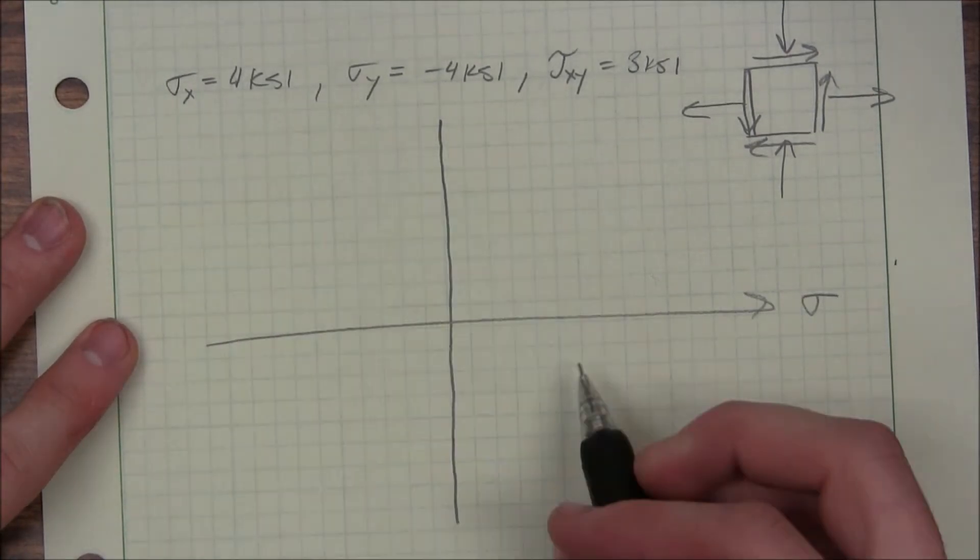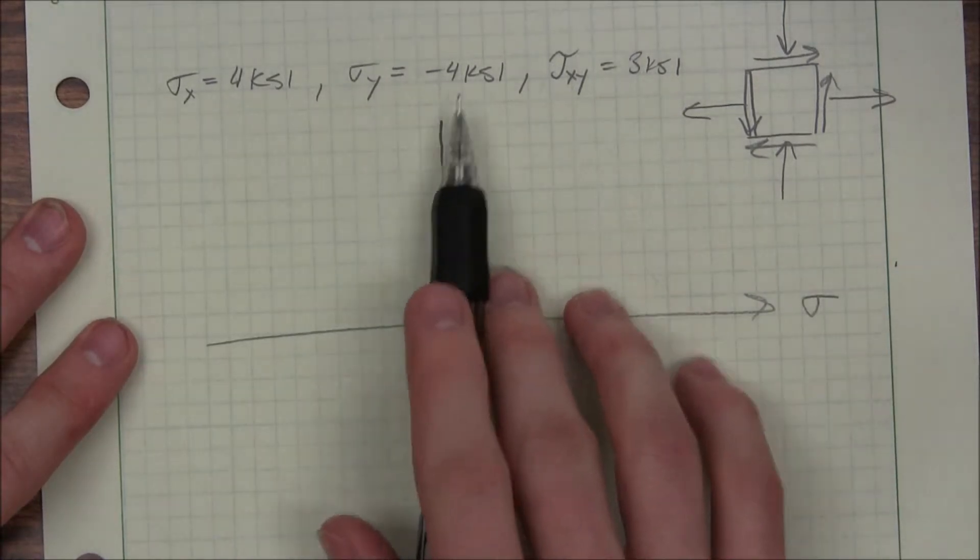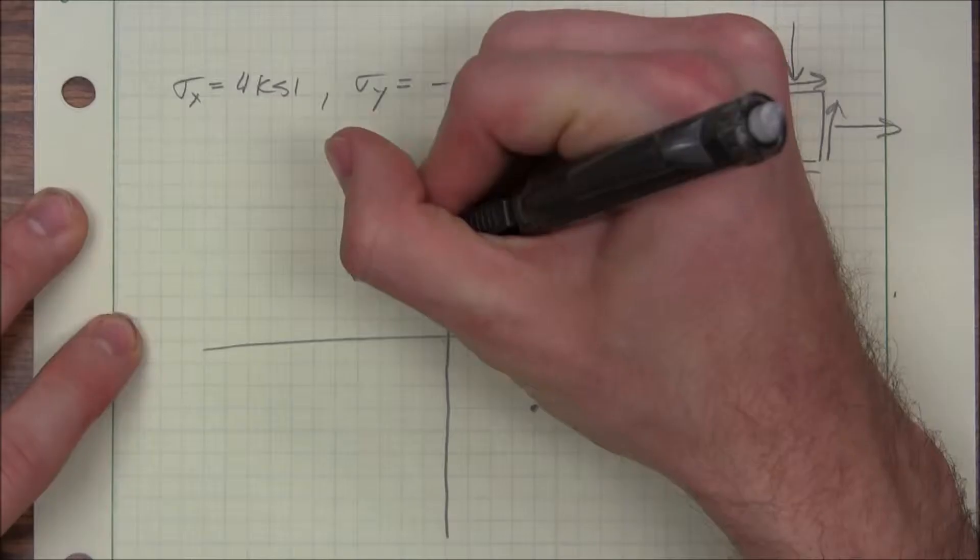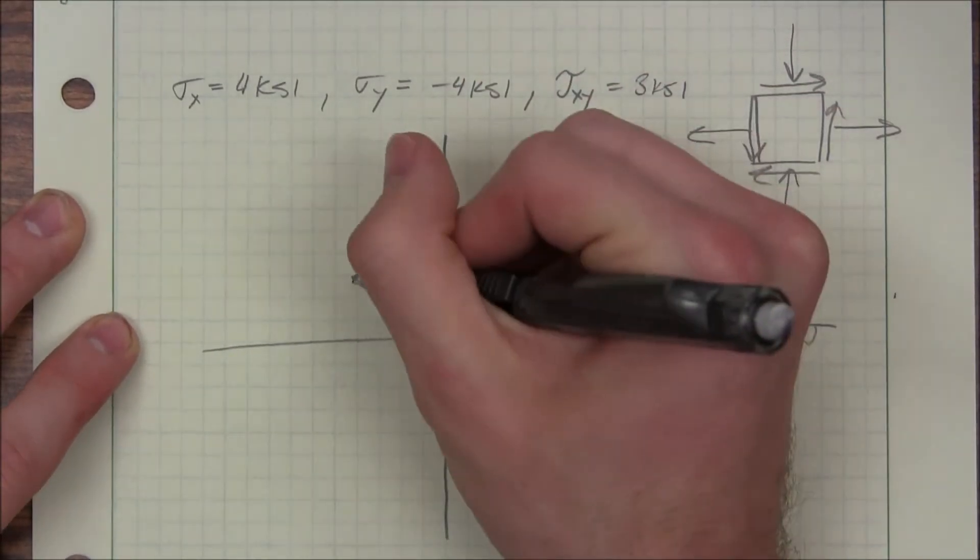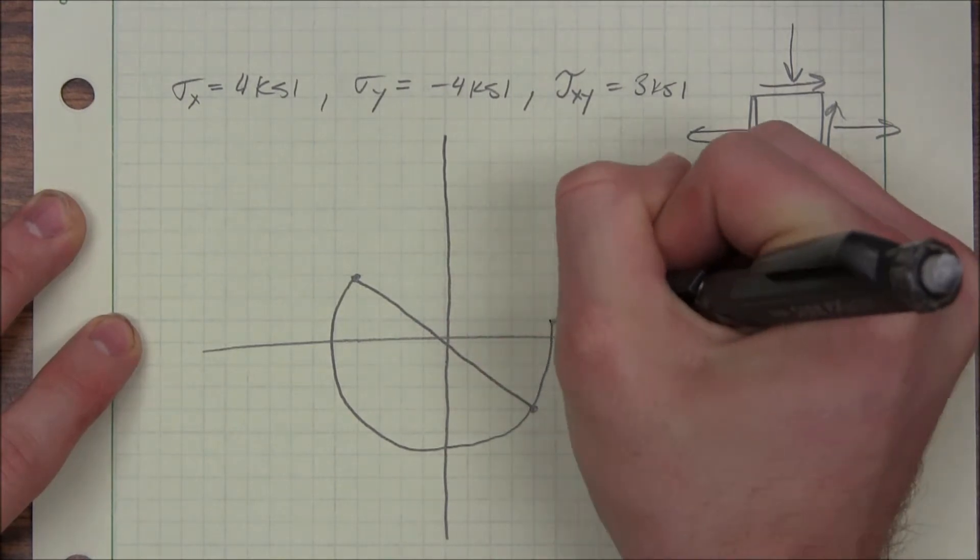So sigma X is 4 and down 3. Sigma Y is up, negative 4, and then up 3. I connect the dots. And using the radius, I can draw the circle.